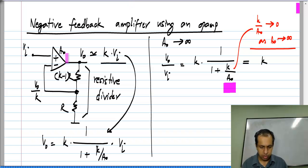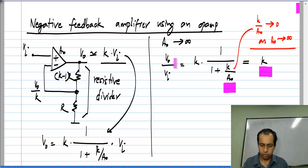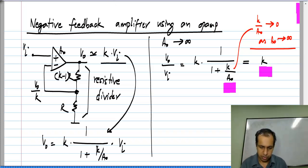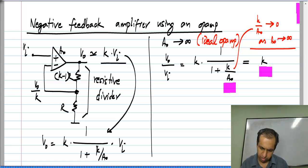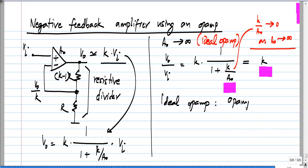Now, if you recall, to come up with this circuit we had originally started with the goal of making an amplifier of gain k — that is, we wanted V_naught/V_i equal to k — and that is exactly what we get if A_naught is infinity. An op amp whose gain A_naught is infinity is known as an ideal op amp, where A_naught tends to infinity.